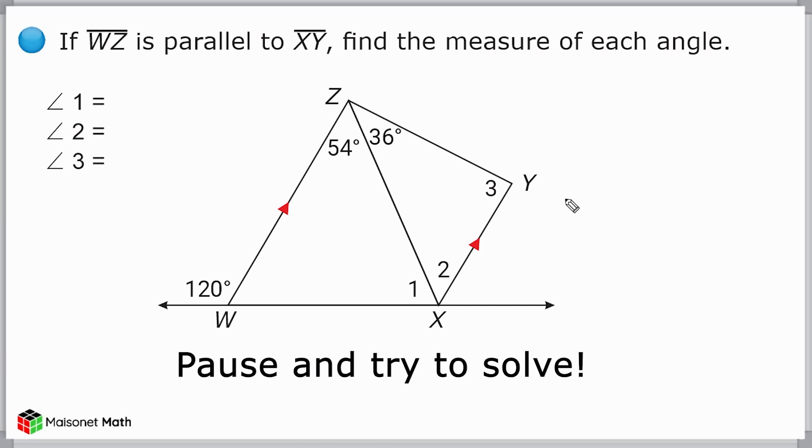Now one thing I like to do with problems like these is try to find one piece of missing information that's easy to find. For example, I can see that this angle right here is sitting right next to this 120-degree angle,